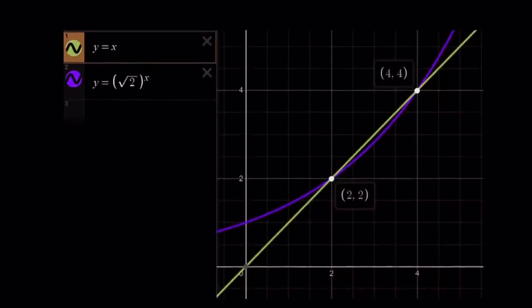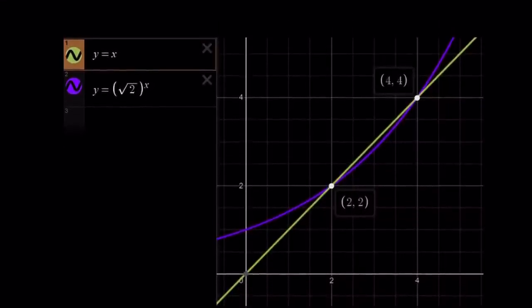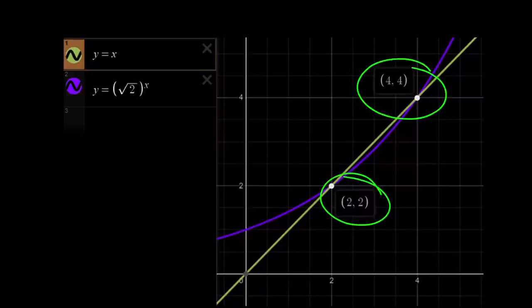Here we go. We have the graph of y equals x. And we have the graph of y equals square root of two to the power x, which is something we used with the first method. And notice that these two graphs intersect at two points, two comma two and four comma four. And this brings us to the end of this video.